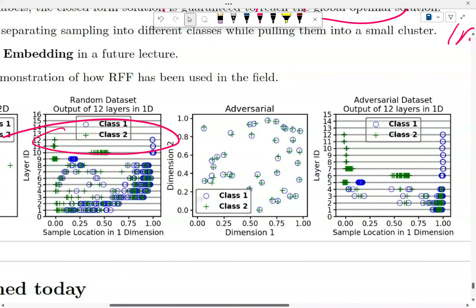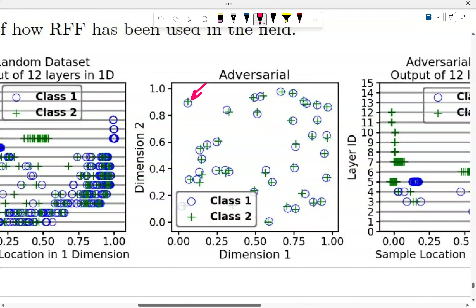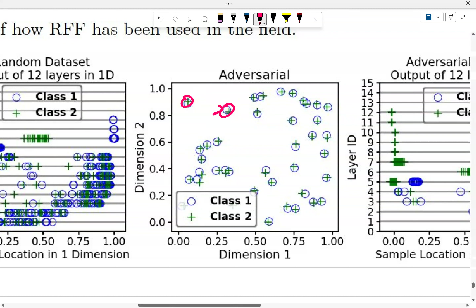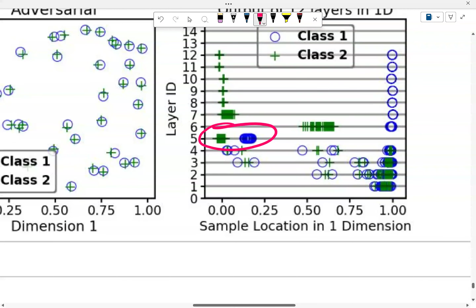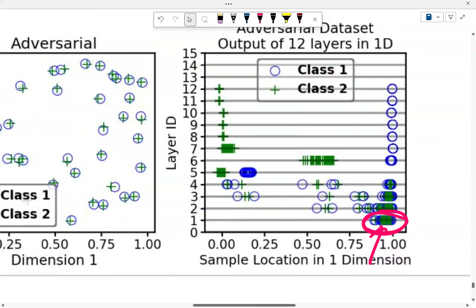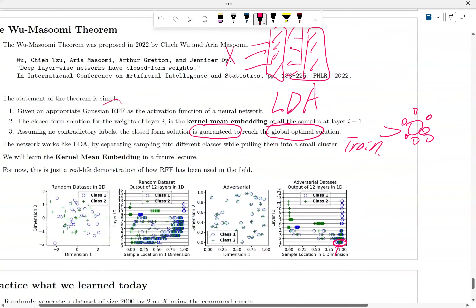They also ran an adversarial experiment, where they purposely placed samples of different classes very close together and samples of the same class far apart — the opposite of what you'd normally want. Even in this adversarial setting, by the fifth layer they were able to create a linearly separable representation, and by the twelfth layer they achieved the global optimal. All of this is based on the idea of using Random Fourier Feature instead of ReLU, which is why Random Fourier Feature is actually pretty cool.